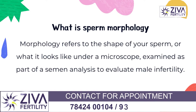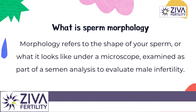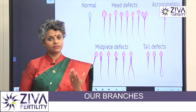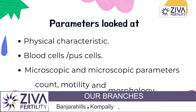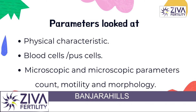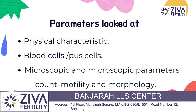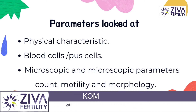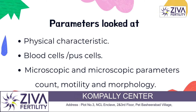When we do a semen analysis, there are a lot of parameters that we look at. We look at physical characteristics, microscopic and macroscopic issues. We look at whether there are any blood cells or pus cells present, and within the microscopic parameters, we look at count, motility, and morphology.